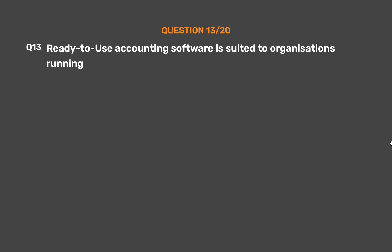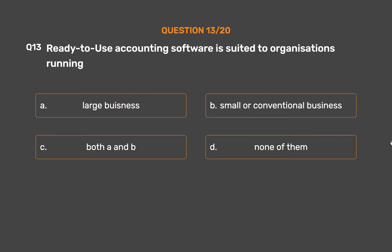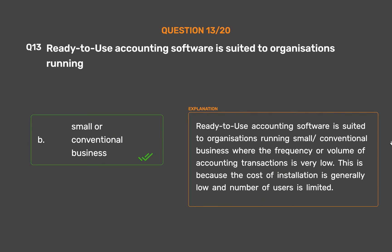Question number 13. Ready to use accounting software is suited to organizations running: Option A: Large business. Option B: Small or conventional business. Option C: Both A and B. Option D: None of them. The correct answer is Option B: Small or conventional business. Ready to use accounting software is suited to organizations running small or conventional businesses where the frequency or volume of accounting transactions is very low. This is because the cost of installation is generally low and the number of users is limited.